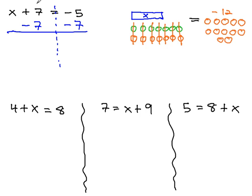Notice when we do this, the 7 positives and the 7 negatives will subtract out, leaving just the x.